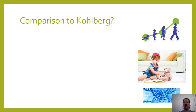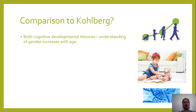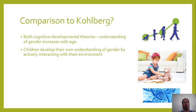Before we move on to evaluation, a brief explanation of how this compares to Kohlberg and what the key similarities and differences are. They're both cognitive developmental theories — the understanding of gender increases with age in both. They're both looking at cognitive aspects of how gender understanding changes. Also, both look at how children develop their understanding of gender by actively interacting with their environment. It's not a passive process; it's not simply innate. It's something they're increasing their understanding of by actively playing with gender-appropriate and non-gender-appropriate toys, for example.